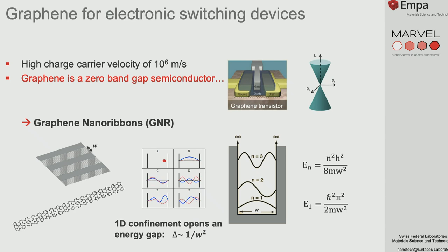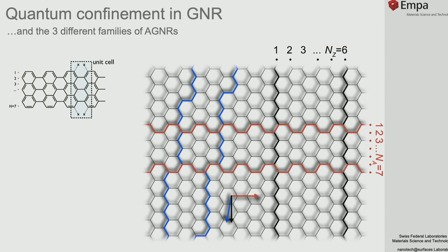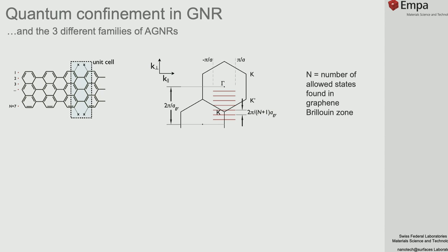One way is quantum confinement. If we cut graphene into one-dimensional stripes—so-called nanoribbons—due to quantum confinement we get a quantization of states and an opening of the gap. There are two main ways to cut graphene into nanoribbons, creating ribbons named after the shape of their edges: the armchair ribbon and the zigzag ribbon. Zigzag ribbons are predicted to have interesting spin-polarized edge states.